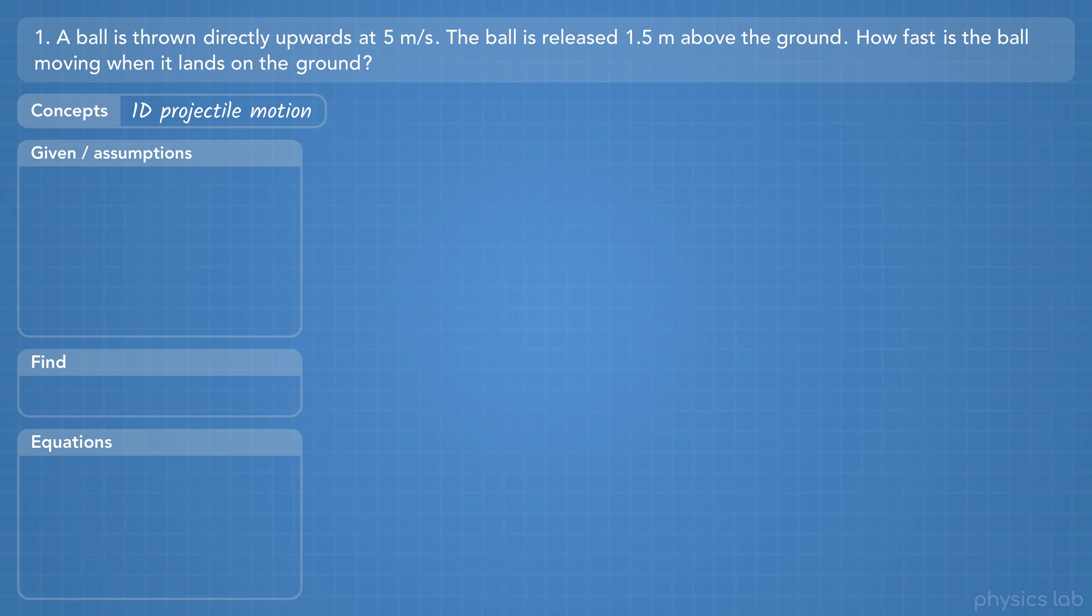As always, let's read the problem a second time, pick out the important information, and draw a picture. For projectile motion, some important information could be the initial and final positions, velocities, or times.